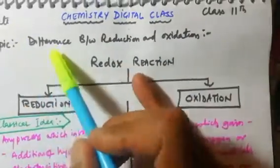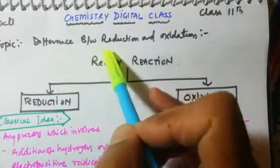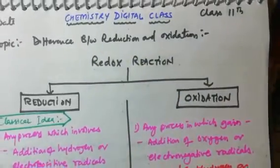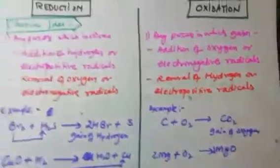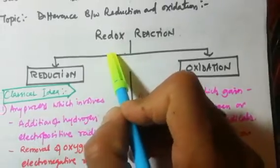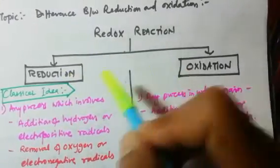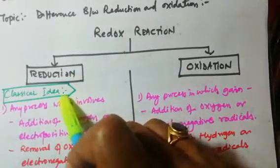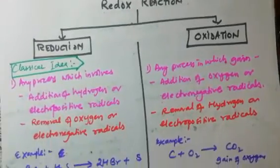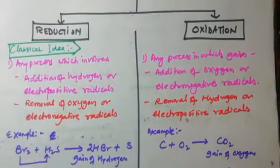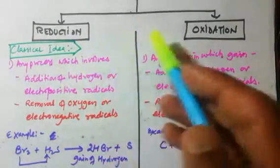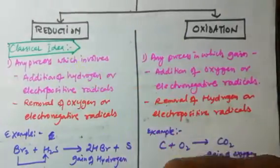Today's first question is the difference between redox, reduction, and oxidation. As you know, a redox reaction is the reaction in which reduction and oxidation occur simultaneously. It is very important to understand what is reduction and what is oxidation. We are going to differentiate reduction and oxidation on the basis of classical ideas and modern ideas.